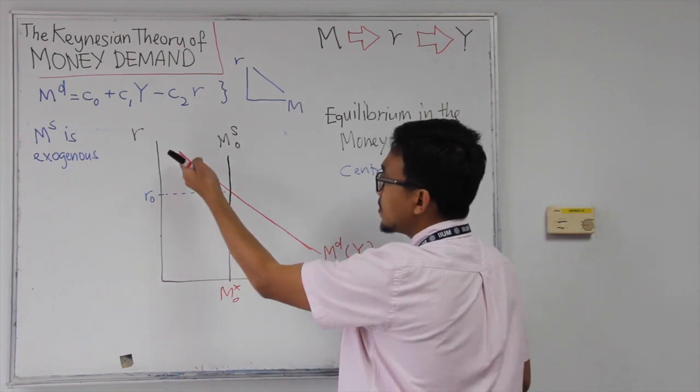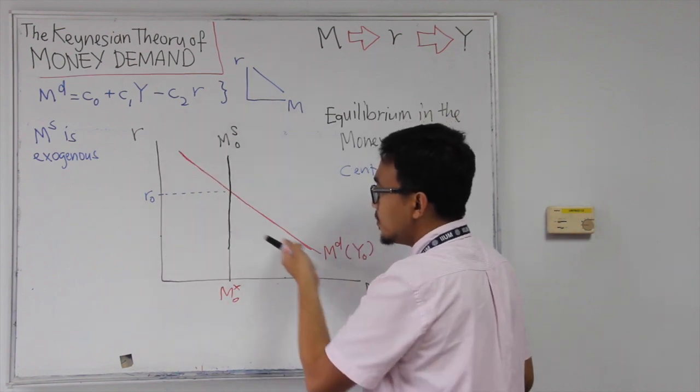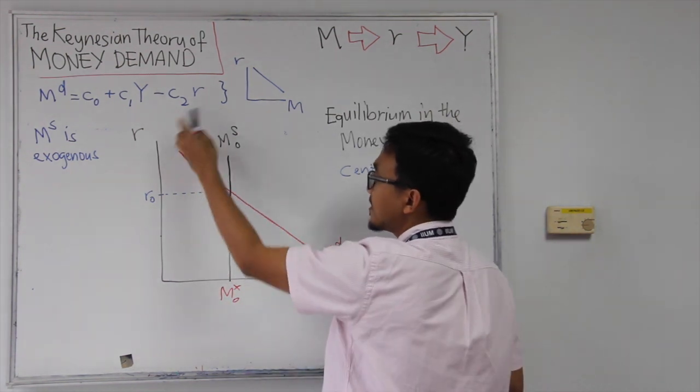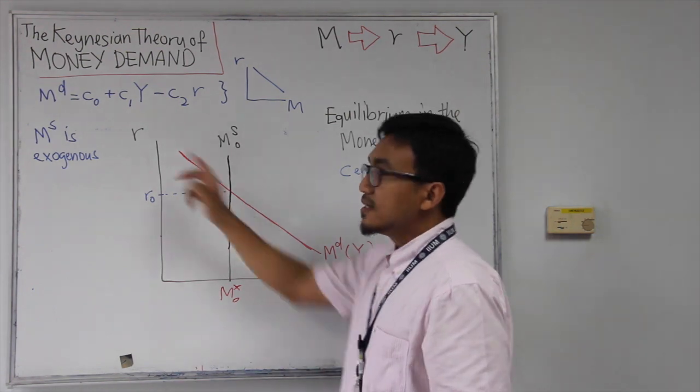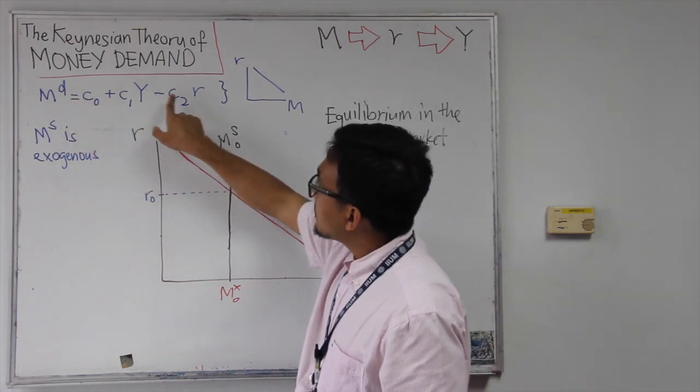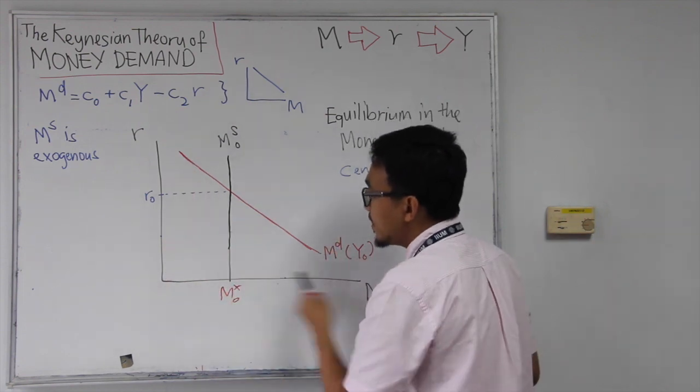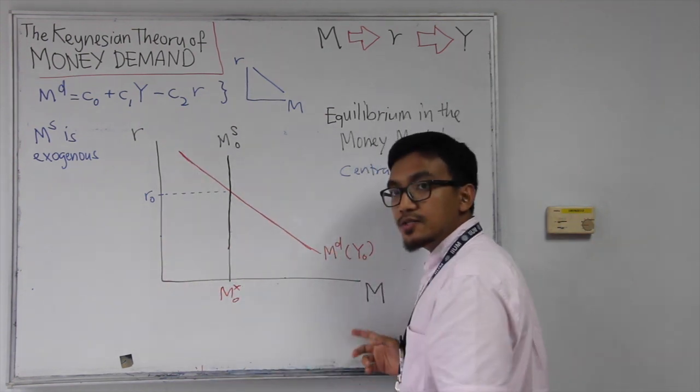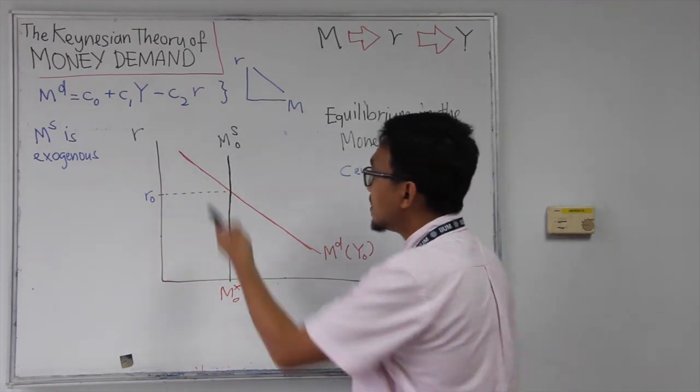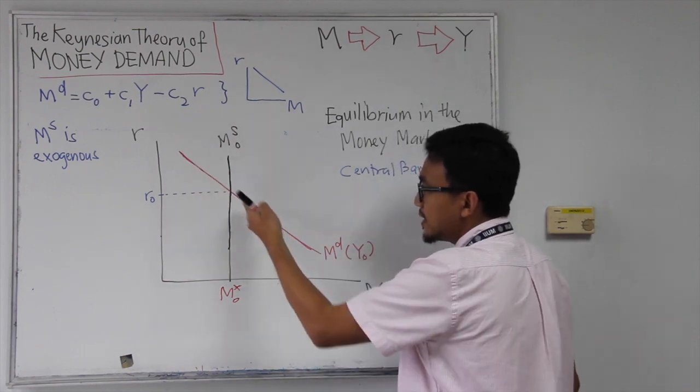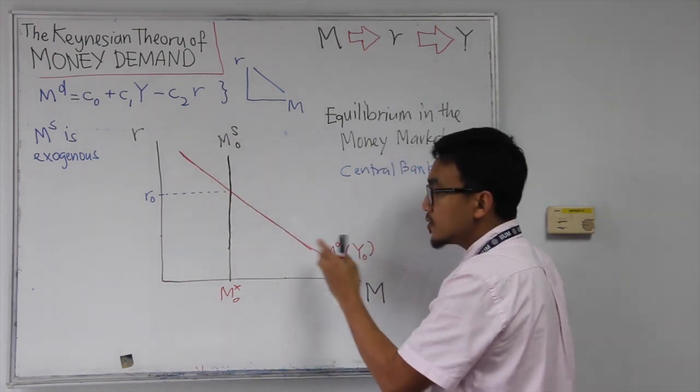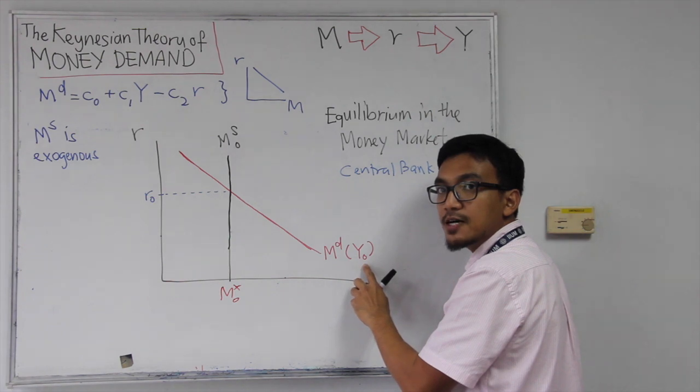So in the money market, we can draw the demand for money which is downward sloping because R is negative. However, since the demand for money is a function of both income and interest rate, in this framework we are only measuring the relationship between money and interest rate. So this demand for money curve is unique. It is only for this specific level of income, Y0.